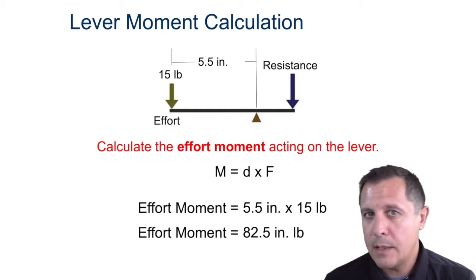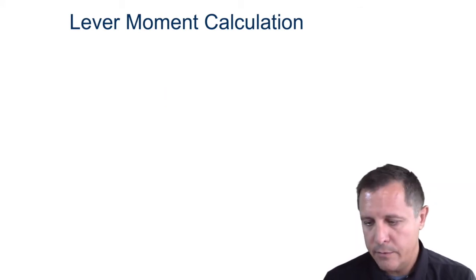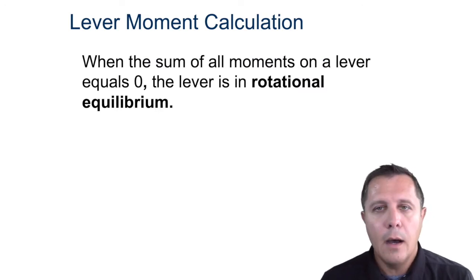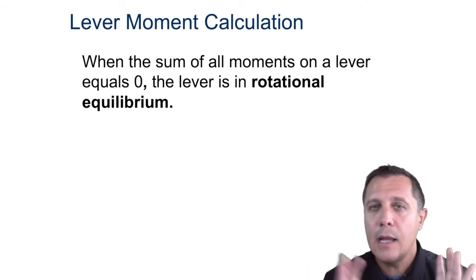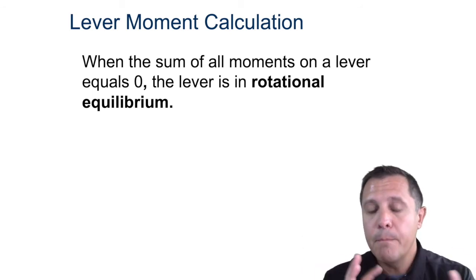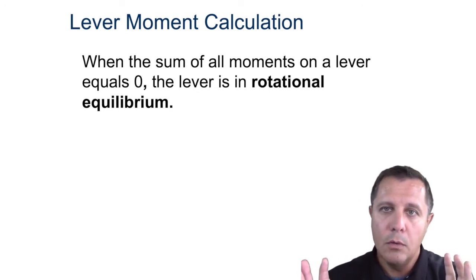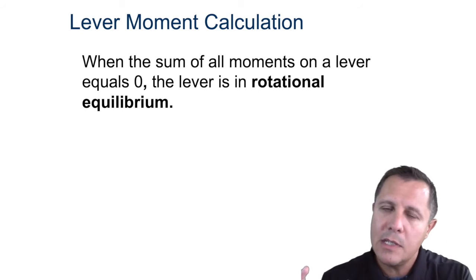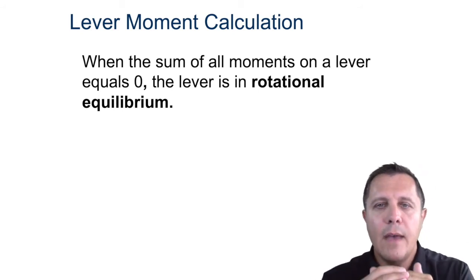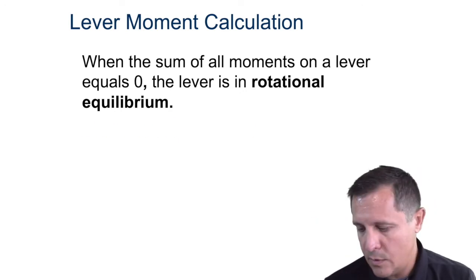I want to make sure we're understanding mechanical advantage. If something is in equilibrium, that means it's not rotating — the moments on both sides are equal. The force times distance on one side of the seesaw is equal to force times distance on the other side. That means there's no rotation going on and no acceleration of rotation.